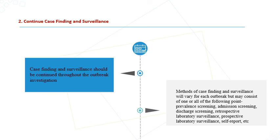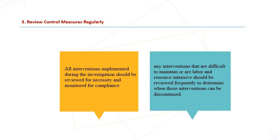To continue case finding and surveillance: this process should continue throughout the outbreak investigation period. The method of case finding and surveillance will vary for each outbreak and may consist of one or all of the following: prevalence screening, admission screening, discharge screening, and retrospective or prospective surveillance. All interventions implemented during the investigation should be reviewed for necessity and monitored for compliance, and any intervention that is difficult to maintain or resource-intensive should be reviewed to determine when it can be discontinued.